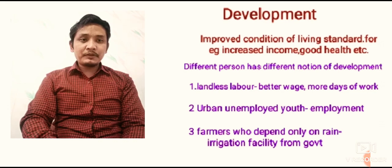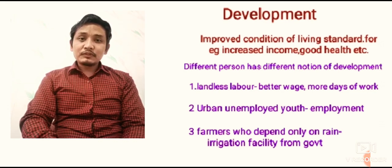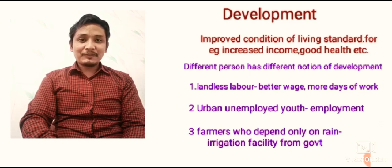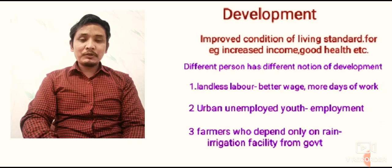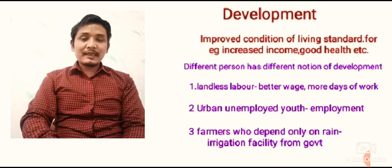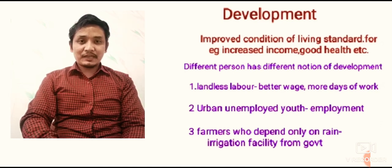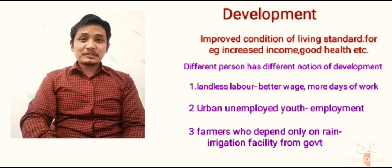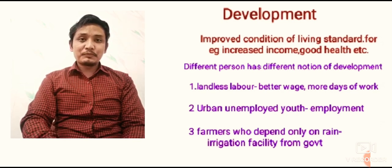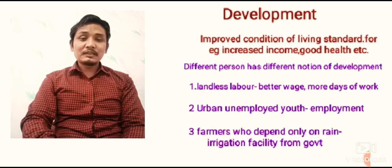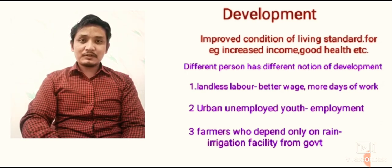Third — farmers who depend only on rain. Jo farmer rain par depend karta hai agricultural production ke liye, unke liye development ka matlab kya ho sakta hai? Irrigation facility from the government. Government unko irrigation ki facility provide kare, to inaka agricultural production automatically increase ho jaega, aur inaka living standard mein bhi improvement aayega.